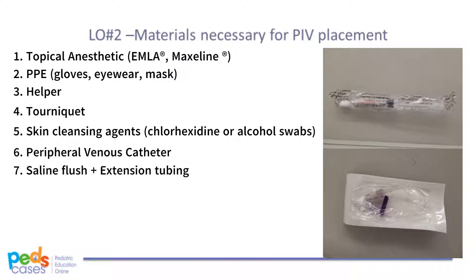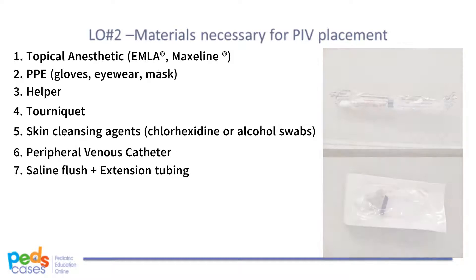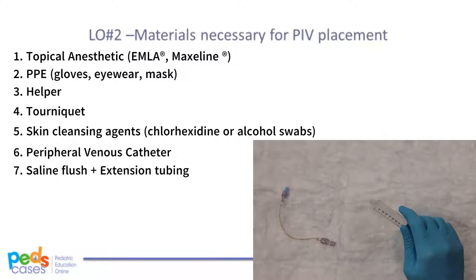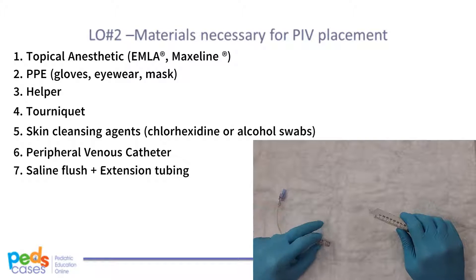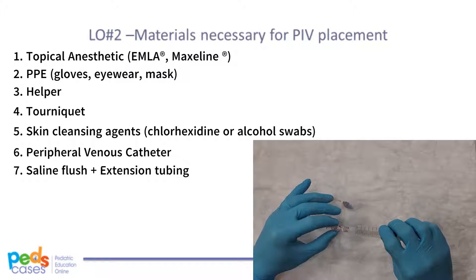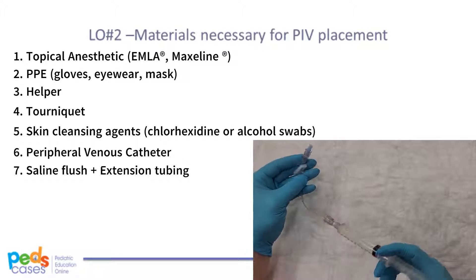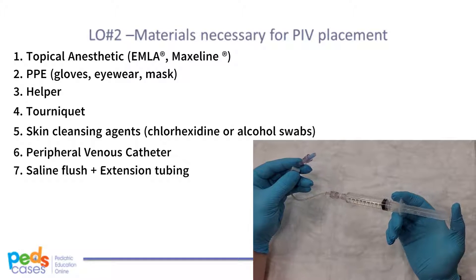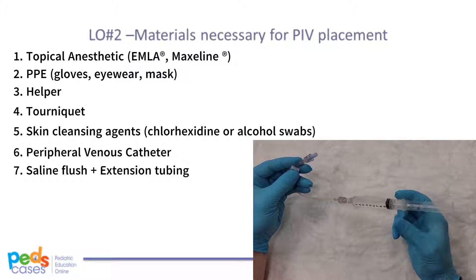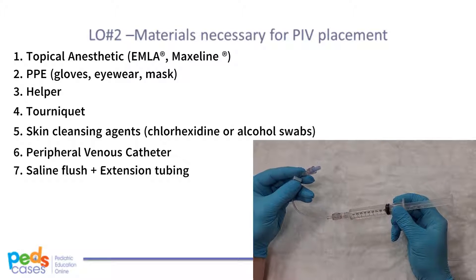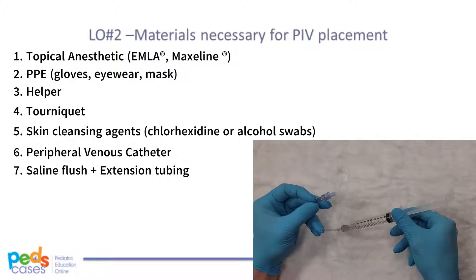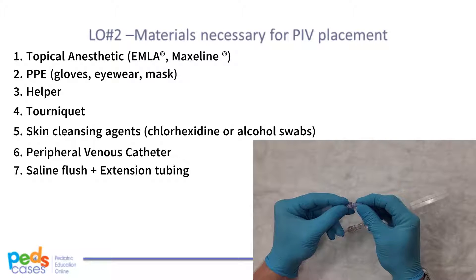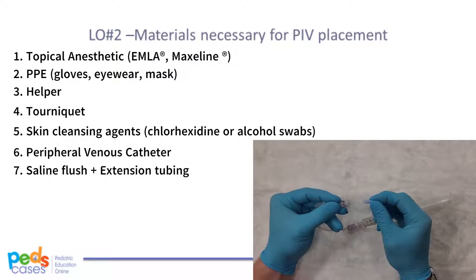Seventh, a saline flush and extension tubing. To prepare this, take a 10cc syringe filled with isotonic saline, sometimes prepackaged as a flush, and the extension tubing. Attach the extension tubing to the 10cc syringe and prime the line by pressing fluid through to the end of the extension tubing to ensure there is no air that can inadvertently be injected into the patient. Unless you have a helper, it is important to do this step now while you have both hands free. For sterility purposes, ensure that you keep the cap on the end until just before you are ready to connect your IV.